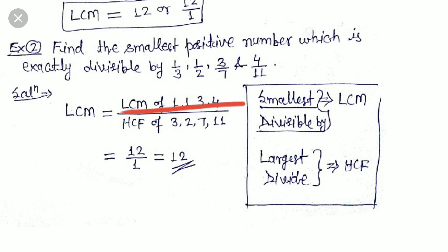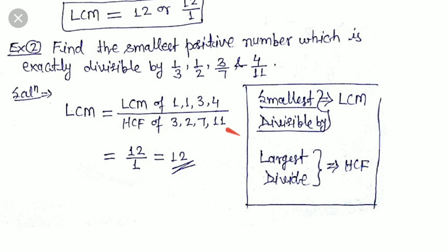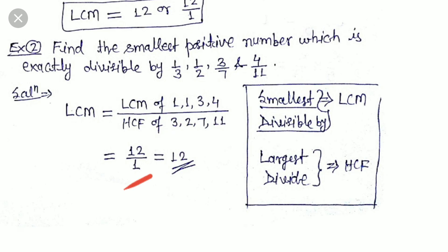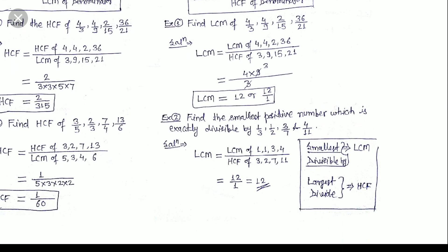LCM = LCM of numerators divided by HCF of denominators. Numerators are 1, 1, 3, and 4. LCM of these = 1 × 1 × 3 × 4 = 12. HCF of denominators 3, 2, 7, and 11 is 1, since no common factor divides all four. So LCM = 12/1 = 12. Note: it doesn't mean every pair of fractions will have the same LCM.